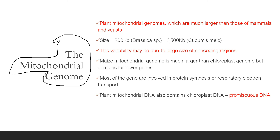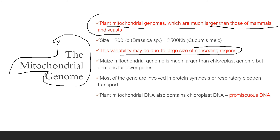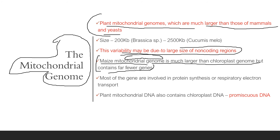Now we study the mitochondrial genome. The plant mitochondrial genome is much larger than those of mammals and yeasts — it is the biggest genome compared to nuclear and chloroplast genomes. Its size varies according to species, and variability may be large due to the presence of large non-coding regions. Importantly, the maize mitochondrial genome is much larger than the chloroplast genome but contains far fewer genes.